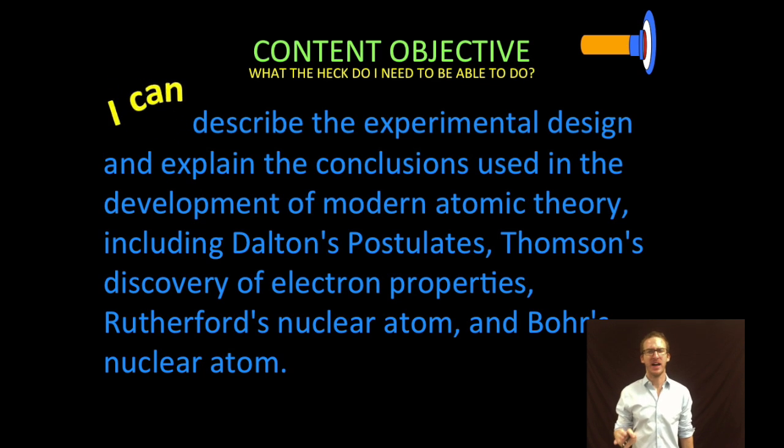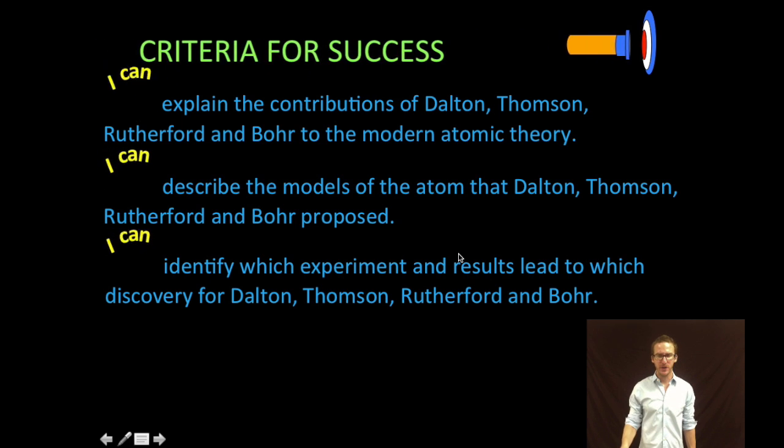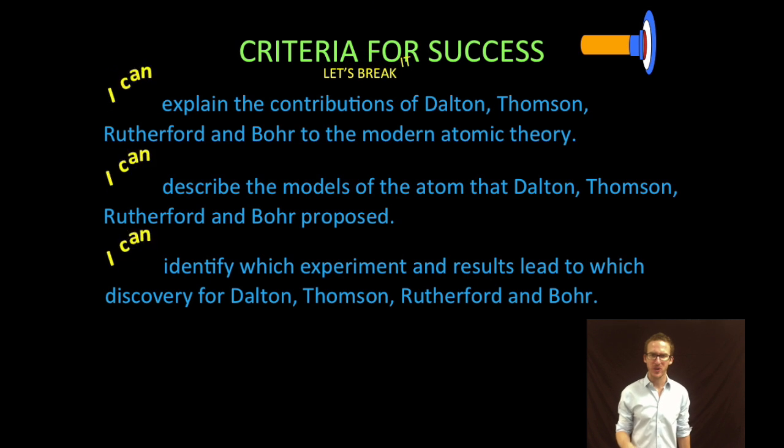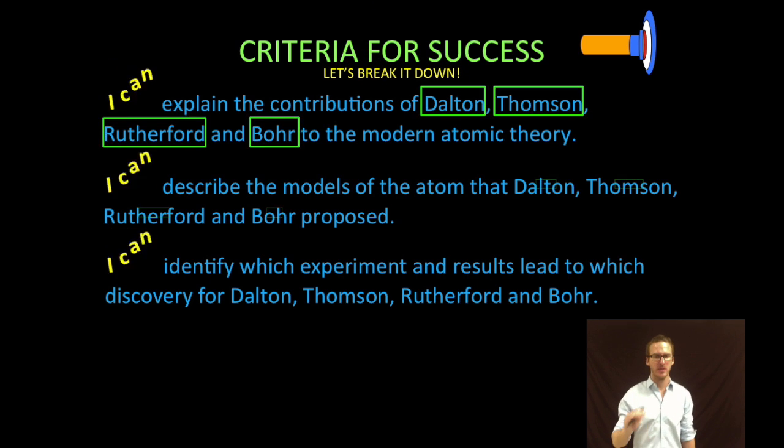We're gonna describe the experimental design and explain the conclusions used in the development of modern atomic theory including Dalton's postulates, Thompson's discovery of electron properties, Rutherford's nuclear atom, and Bohr's nuclear atom. Definitely a lot there. We are going to break it down a little bit.